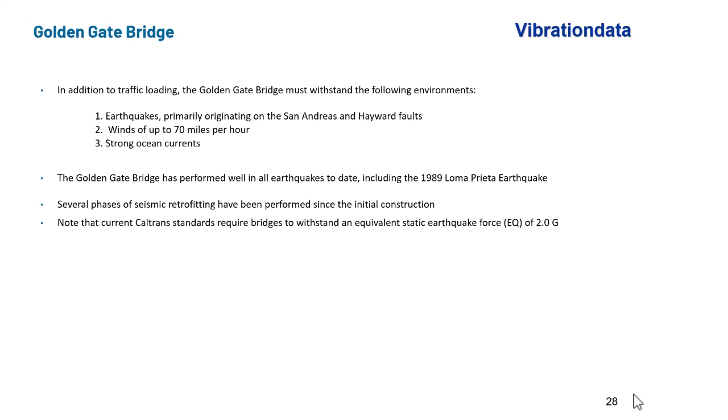So the Golden Gate Bridge has to withstand a variety of environments. Of course, there is the traffic, which can include cars, buses, trucks, semi-trucks, and so on. But there's also the natural environments. So earthquakes, primarily originating on the San Andreas and Hayward Fault systems, winds up to 70 miles an hour, and then the strong ocean currents. The Golden Gate Bridge has performed well in all earthquakes to date, including the 1989 Loma Prieta earthquake.